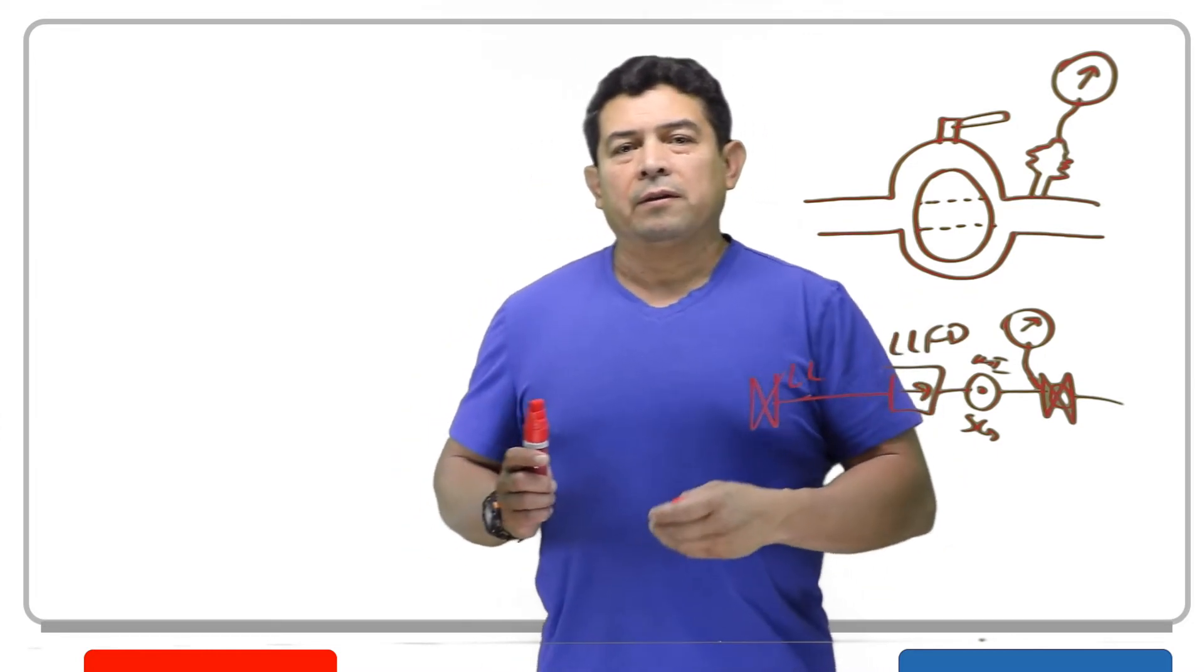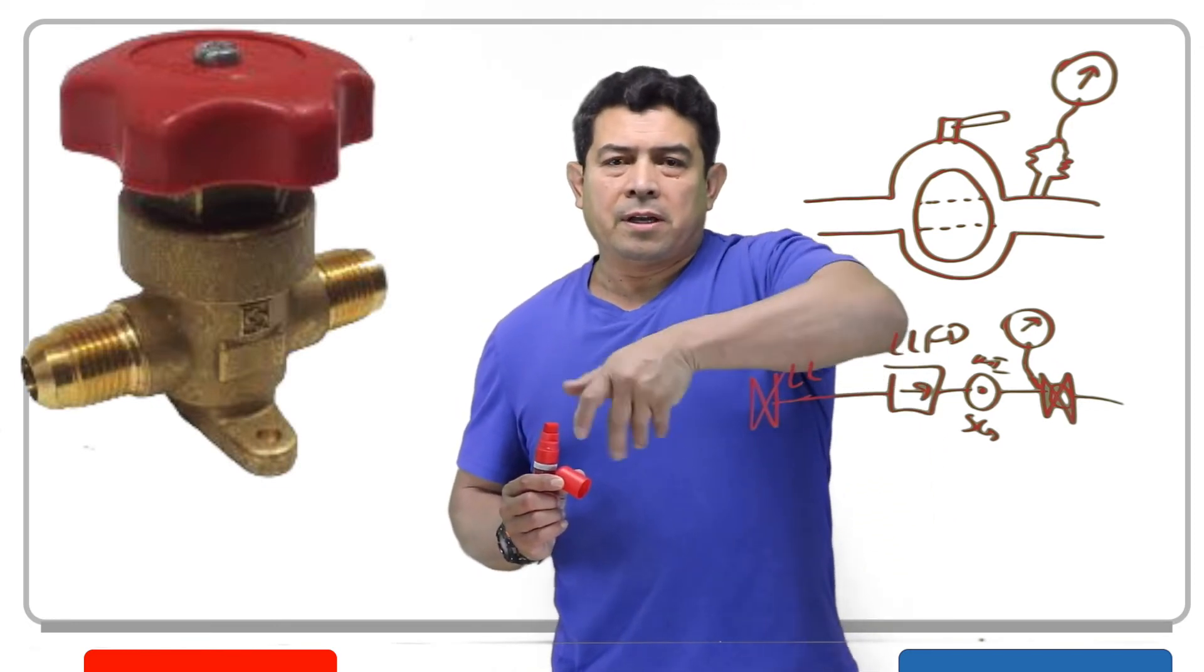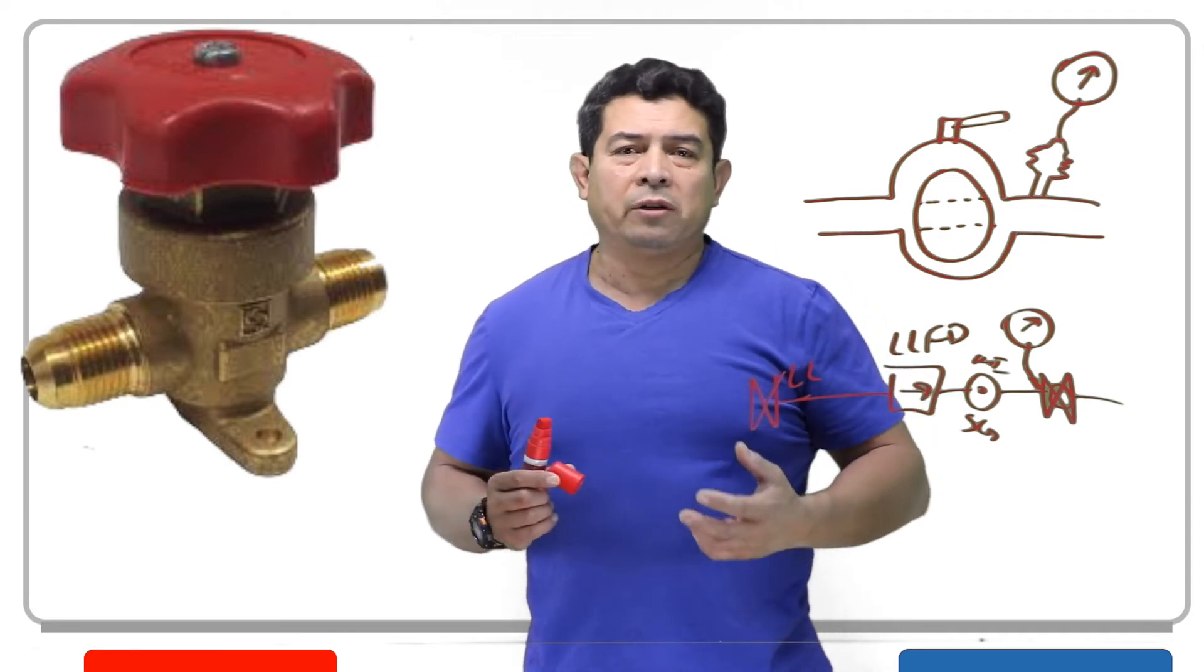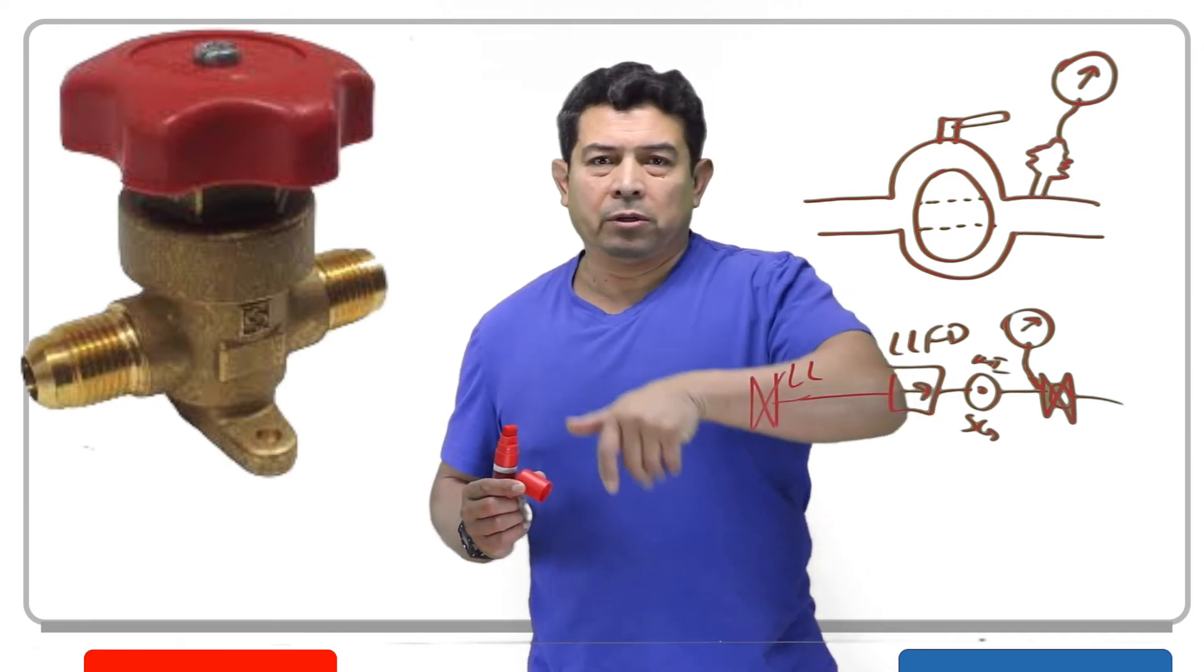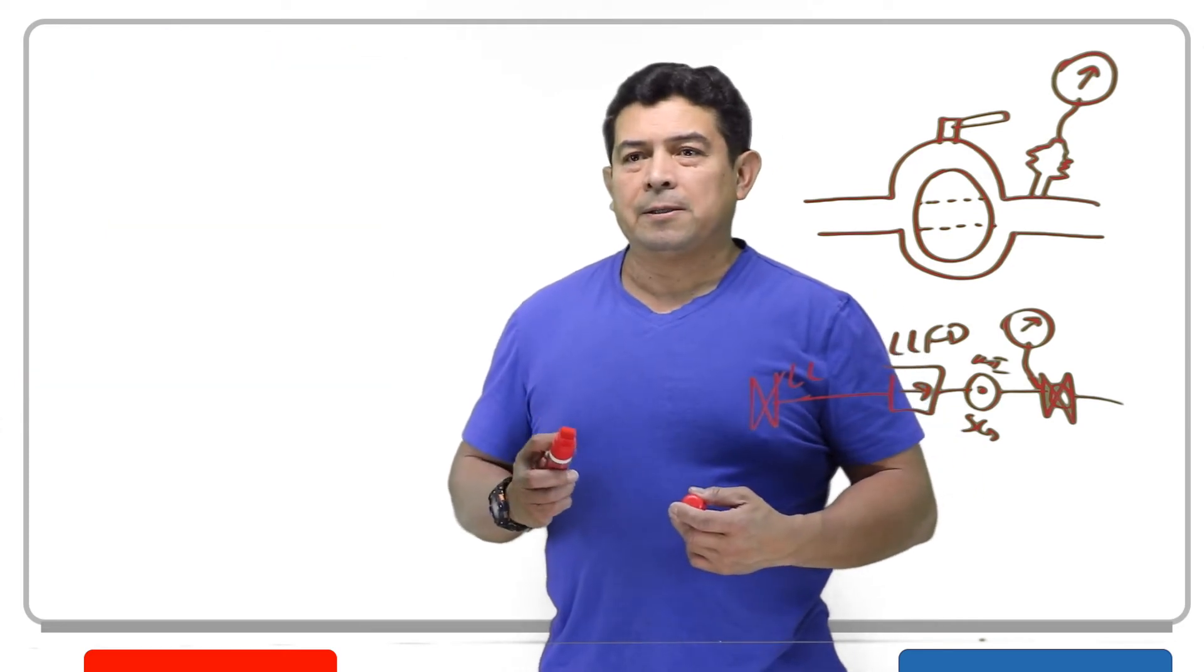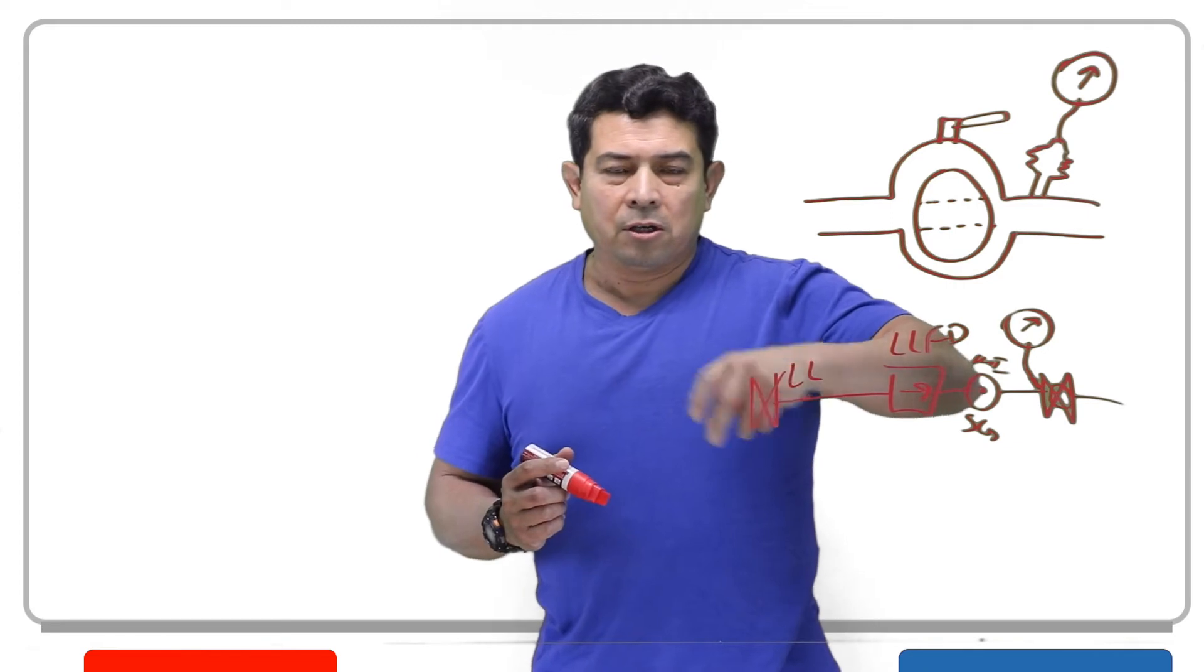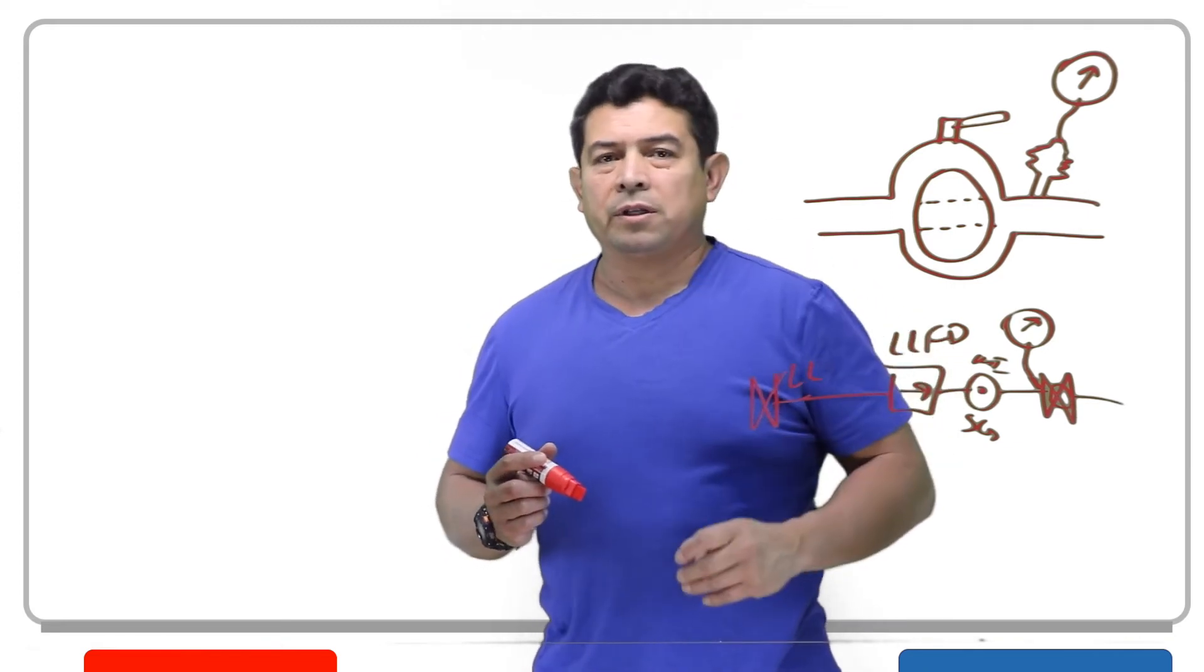As you can see, it has a handle on it so that you're going to turn it just like a globe valve. You're going to open it, you're going to close it. The good thing about this valve is that you're going to be able to regulate the flow. You can actually adjust it so that you can increase or decrease the flow.